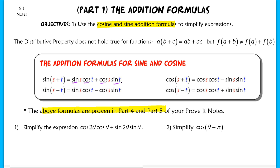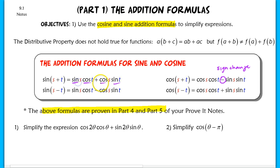Now for the cosine formula, the next line in the chant, you're going to clap to signify a sign change. So it literally sounds like this: 'Sine, cosine, cosine, sine. Cosine, cosine, sine, sine.' And it's very silly. The clap represents the sign change in the cosine formula.